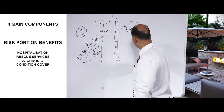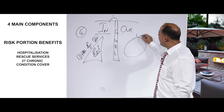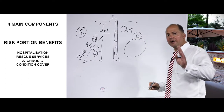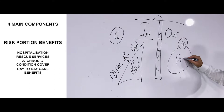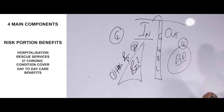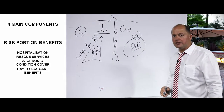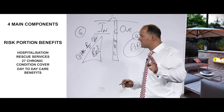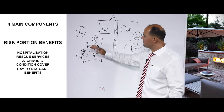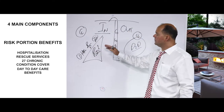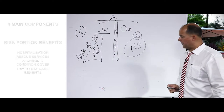Benefit four is situated on the out-of-hospital side, and that's also better known as day-to-day care benefits. So those are the four main components in a medical aid scheme: hospitalization, rescue service, chronic condition cover, and day-to-day care.